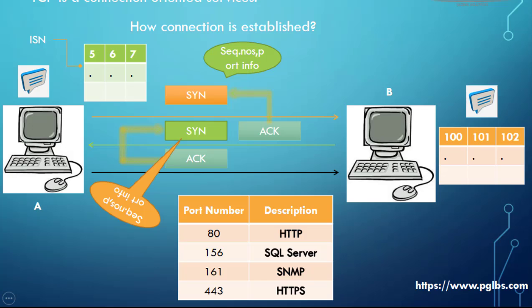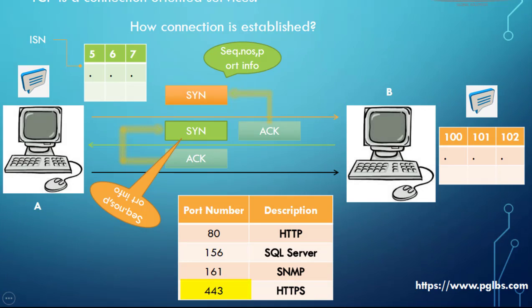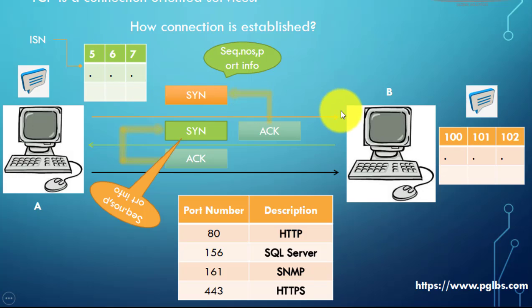There are various port numbers. For example, when you are browsing the internet you are using an HTTP connection - that is port number 80. If you are using an SQL server, it is port number 156. If you are browsing a secured connection, for example internet banking, then it is port number 443. Depending upon what kind of message A is sending to B, it sends the sequence numbers of the packets and the port number to B.